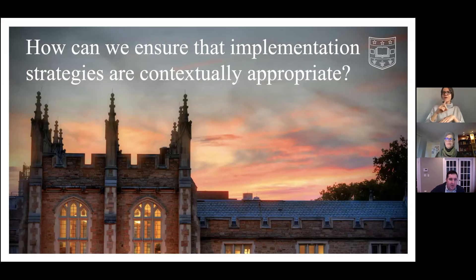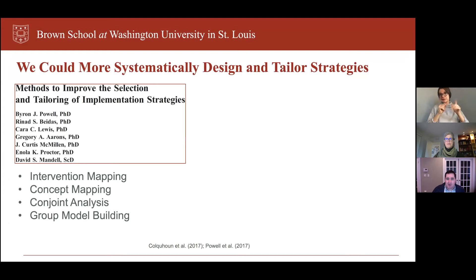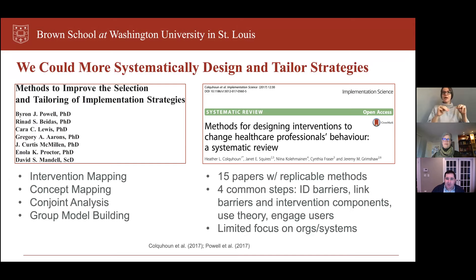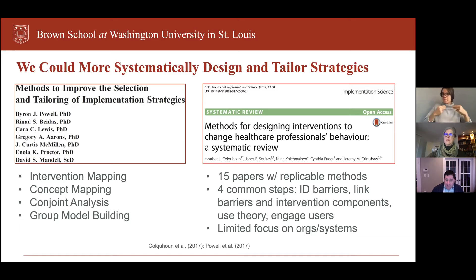Much of what we're going to talk about today is how we can ensure that implementation strategies are contextually appropriate. There are a number of ways to do this. One is to think about methods for systematically designing and tailoring implementation strategies — designing thoughtfully from the outset, considering the needs of key stakeholders, integrating evidence and theory into early formative work, and developing systematic methods to adapt or tailor implementation strategies when necessary.